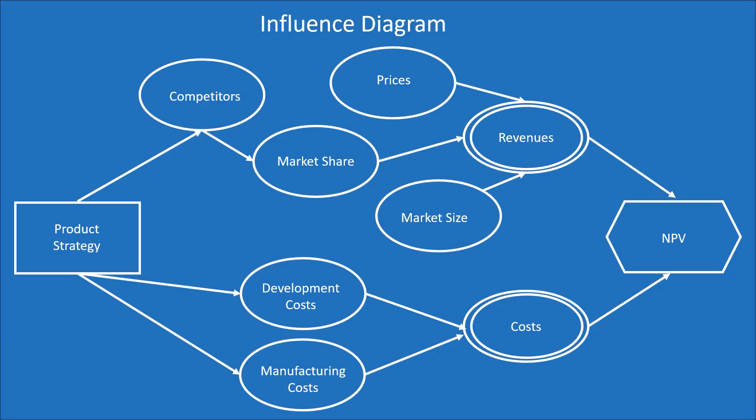The factors are represented by shapes, and arrows show the direction of influence among these factors. Here's a simple influence diagram. This diagram shows the decision model for choosing a product strategy — whether to build a high-value product with a high price or a low-value product at a lower price. The decision is shown at the left of the diagram.